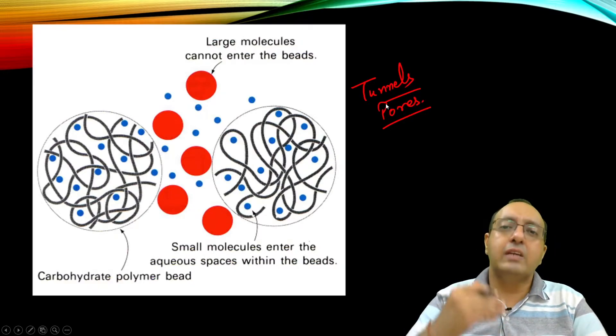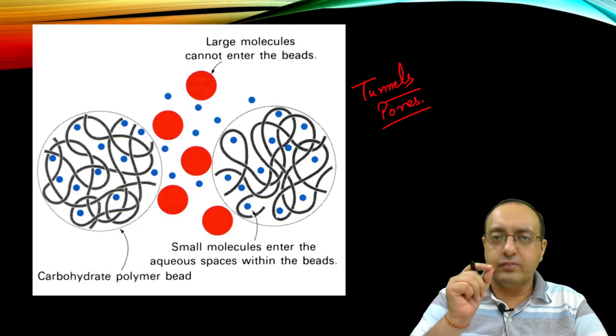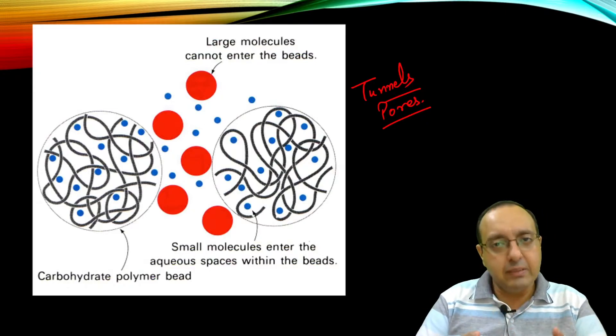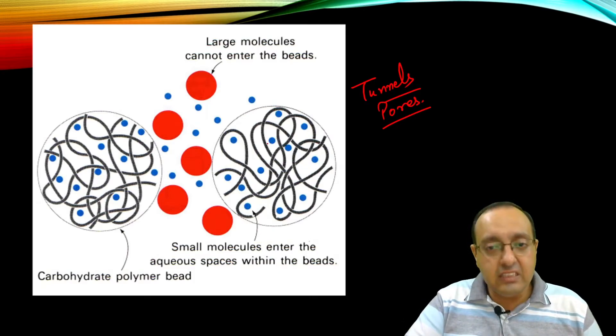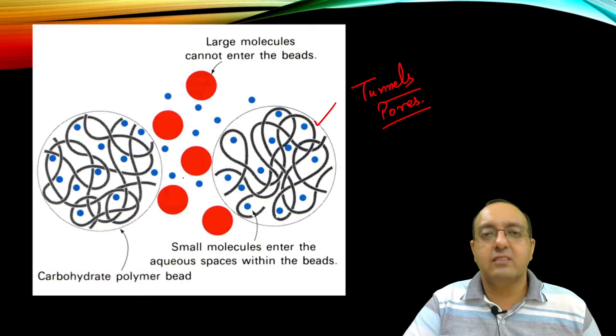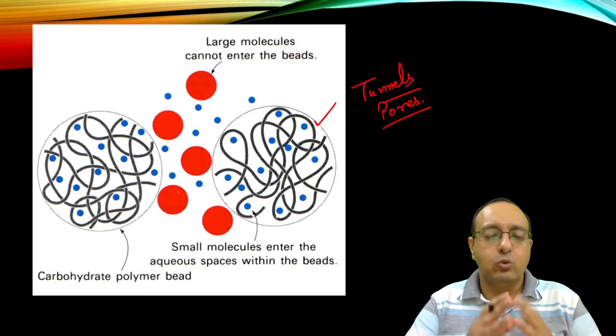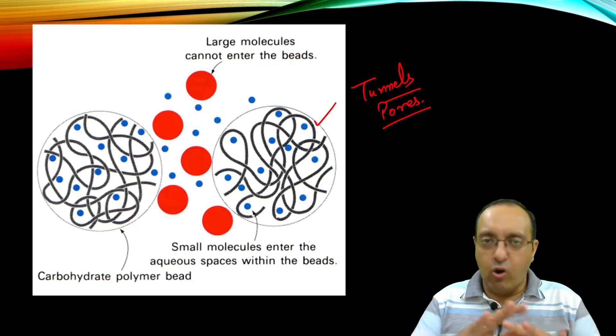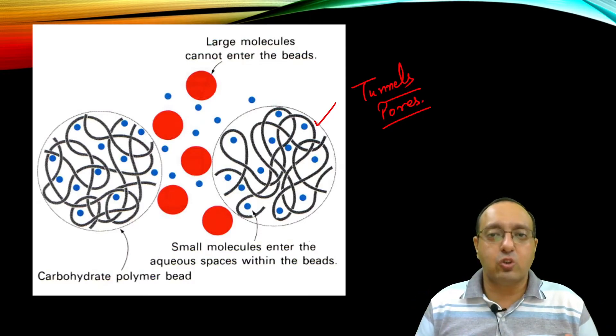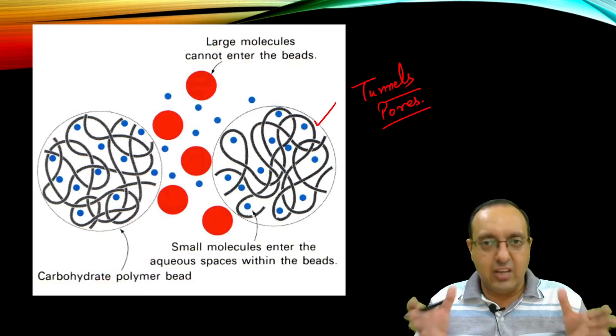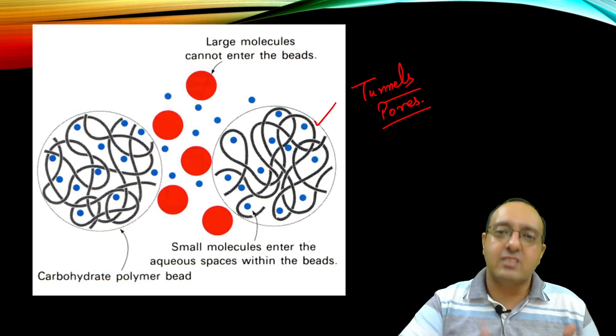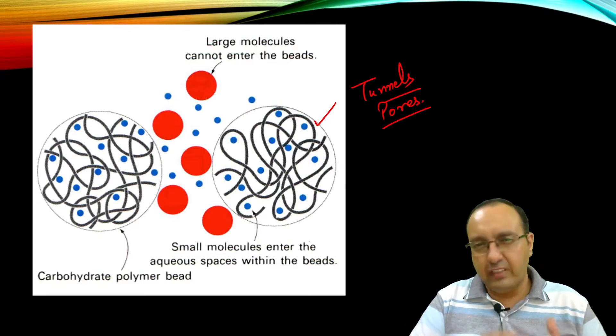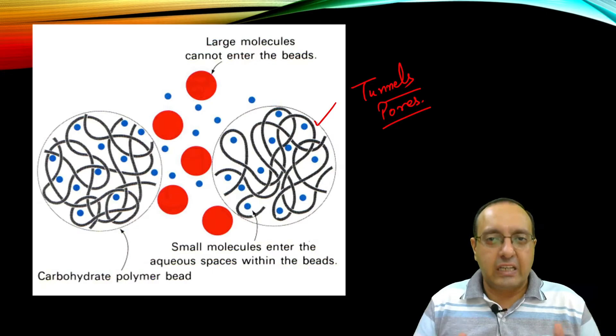What happens is the proteins, based on their size, can either enter these beads, or if they're too large, they stay out of the beads. That's the overall technology and concept behind size exclusion chromatography. The name says it all: size exclusion—exclusion means to keep out based on size. This is also called gel filtration chromatography. It's really a filtration technique, very physical in nature, not chemical at all.